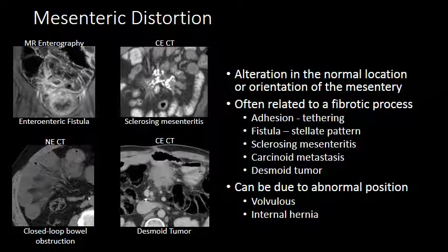Mesenteric distortion is another term I often use, describing an abnormal configuration or an alteration in the orientation of the mesentery with respect to the way it should lay naturally. This is often related to some sort of fibrosis or inflammation that causes the mesentery to be clumped or drawn into a specific location.